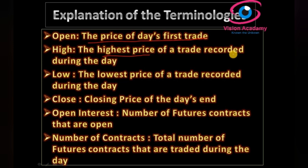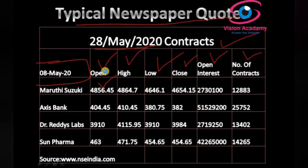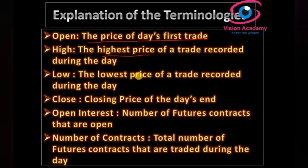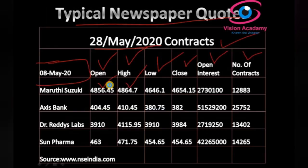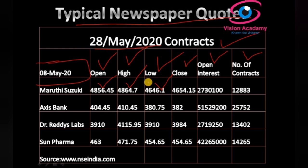Open means the price at which the stock trading opened when the exchange started trading. Next is High — the highest price of a trade recorded during the day. It is about intraday trading. During the whole day, the Maruti Suzuki company reached a peak of 4,864.7 — this is the highest rate recorded during the day. Low is the lowest price of a trade recorded during the day. The Maruti Suzuki stock went down to 4,646.4 — that was the lowest point during the day. Open, High, and Low all relate to trading during the day only.